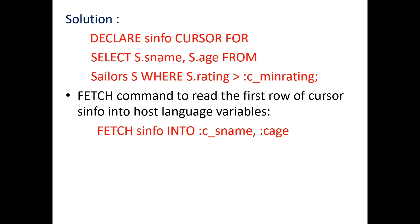Once this query has been executed, we get output with several rows based on the condition satisfied. To fetch the values, we use the FETCH command to read the first row from the cursor table into host language variables. The FETCH command reads the first row of the cursor from the table into the host language variable. For example, FETCH s_info INTO :c_name, :c_age retrieves the name and age values satisfying the condition.